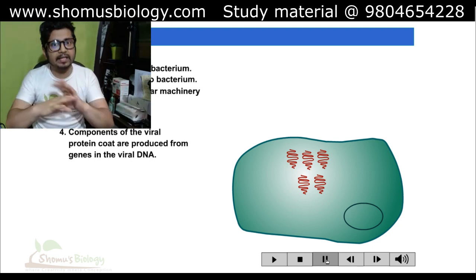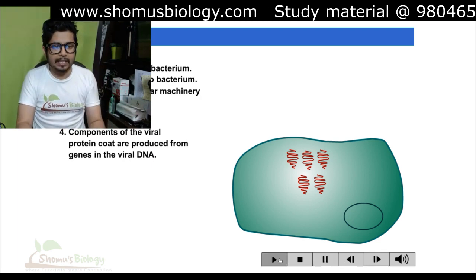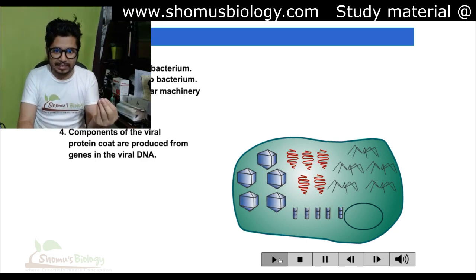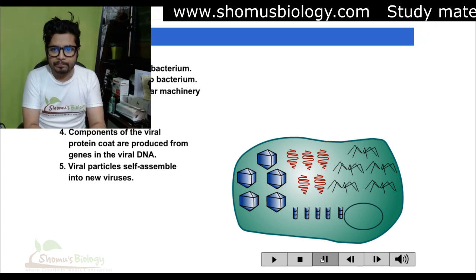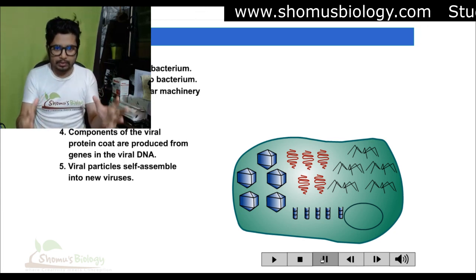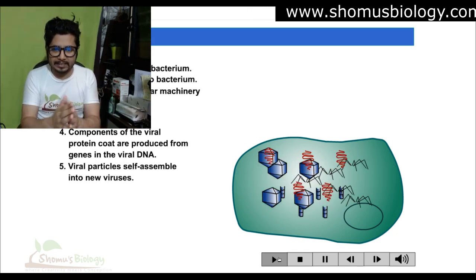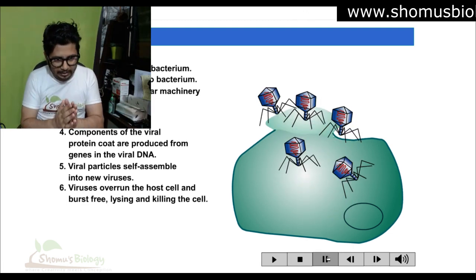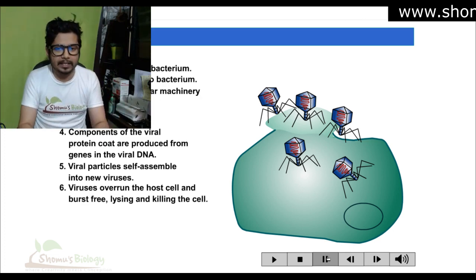The second phase is the late infection stage. After DNA replication is complete, the components of the viral protein coat are produced from the replicated DNA. This includes the phage tails, the phage head, and all individual phage particle components. These components are then packaged inside the phage head. You can observe this packaging process completely before the virus overruns the host cell.